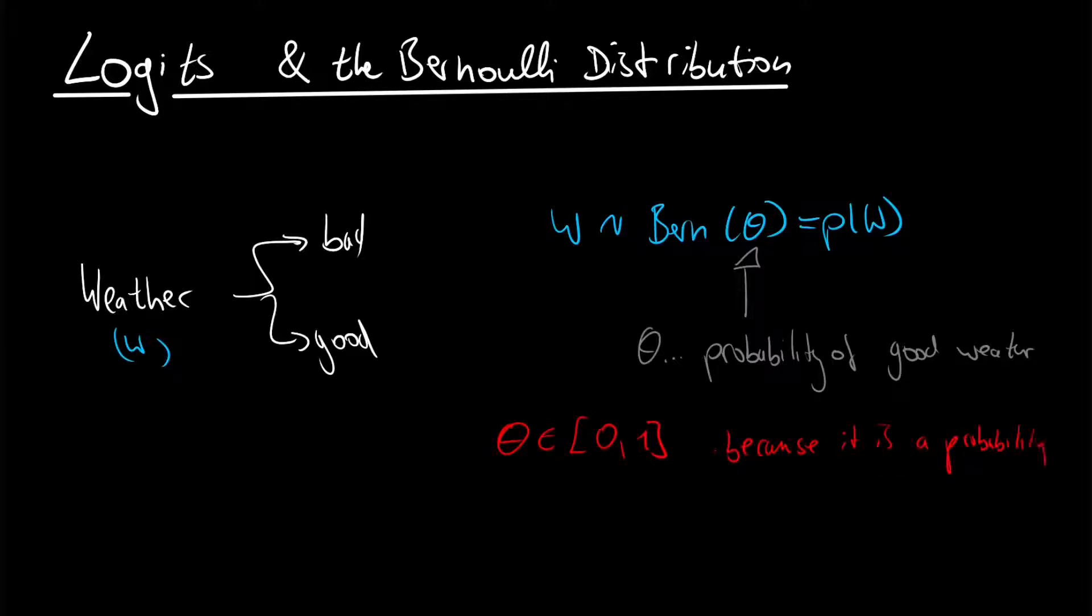Now assume that you want to use a different parameter, let's say psi, and this psi has to be in a range from minus infinity to infinity. How to do this? Here we would use a logit function.